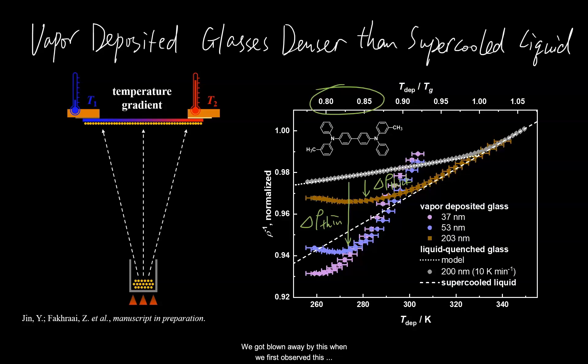We got blown away by this when we first observed this happening. As we recall that supercooled liquid is a metastable liquid representing equilibrium, it defines the limiting configuration that a vapor-deposited glass can relax to achieve. But in this figure, we clearly see that this so-called equilibrium limit has been violated. Now what is the significance of this?